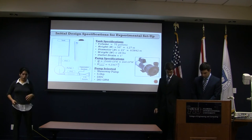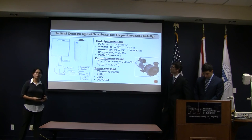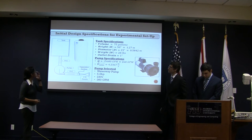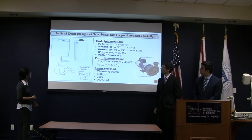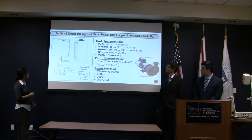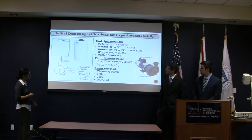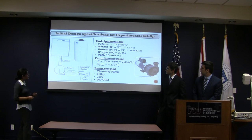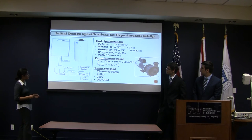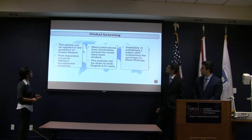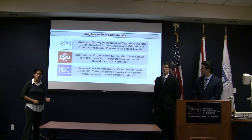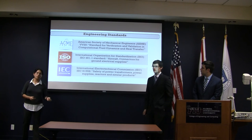Our initial design for the experimental setup consists of a 75-gallon tank, a PVC pipe system, a pump running at 60 gallons per minute to accelerate the flow, and an expansion section to connect the PVC pipe to the inlet of the nozzle. Now Sam is going to tell you more about the engineering standards and global learnings we have used.